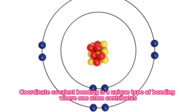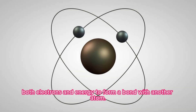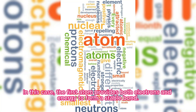Coordinate covalent bonding is a unique type of bonding where one atom contributes both electrons and energy to form a bond with another atom. This occurs when the second atom has a full outer shell but lacks the energy to remove electrons from a lower energy level. In this case, the first atom provides both electrons and energy to form a stable bond.